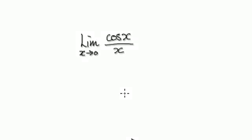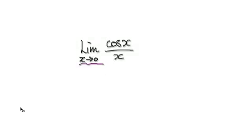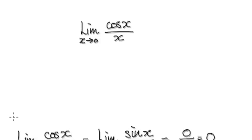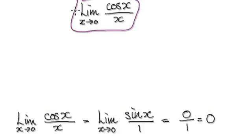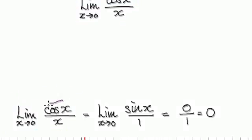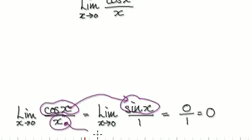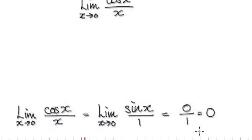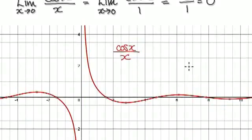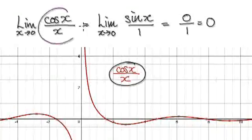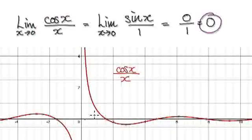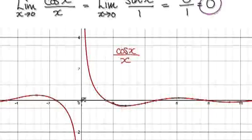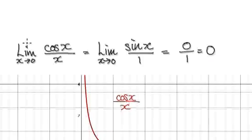Next one. Find the limit of this as x tends to 0. Most of you will probably just go ahead and differentiate the numerator to get this, and differentiate the denominator to get this, and then say the answer is 0. But this is wrong. If you get a graph plotter and plot cos(x) over x, you can see the limit is not 0 — it's not heading towards 0 at all.